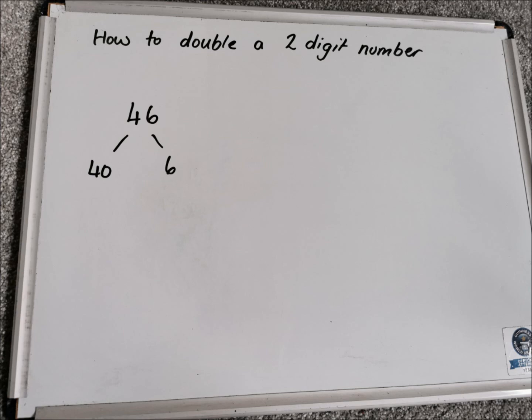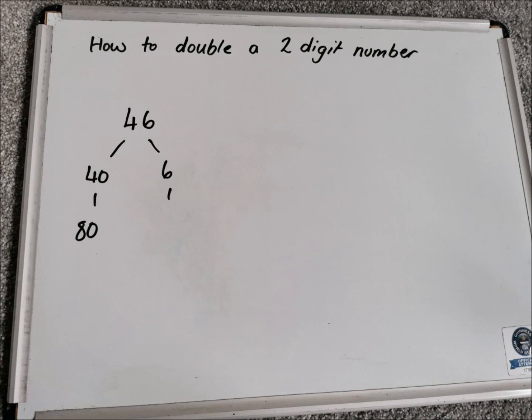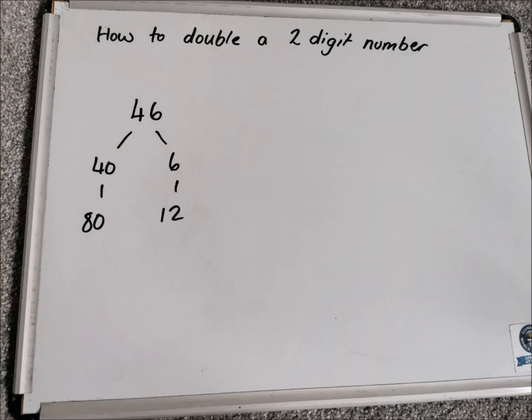We would then double each part of that partition. If we know double 4, we know double 40. Double 4 is 8, so double 40 is 80. Then we can double 6, and we should know that double 6 is 12.